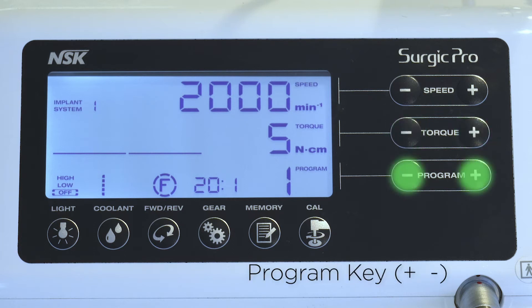Select a program number by pressing the program plus or minus key until the desired program number is displayed. Press the light key to select the light level, either off, low or high. Press the coolant key to select the coolant solution flow.